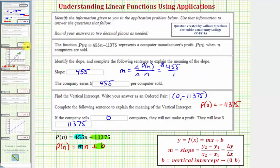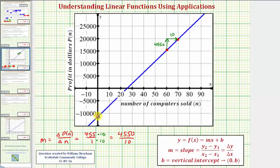Looking at this graphically, here's the vertical intercept with coordinates zero comma negative 11,375. Again, if they sell zero computers, they will have a loss of 11,375 dollars.